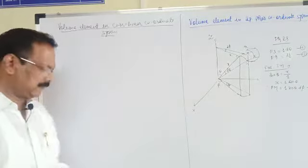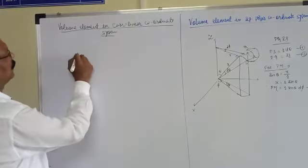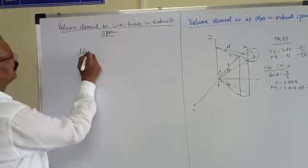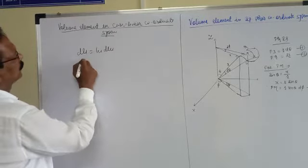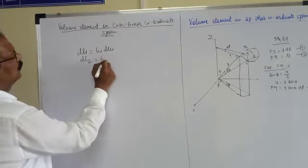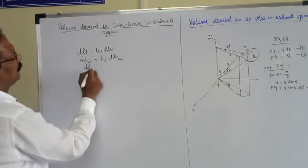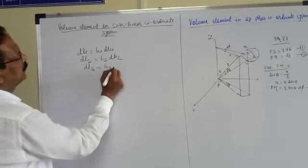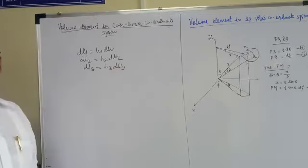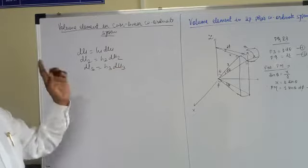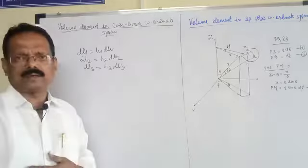Last time we saw what the length element is — we have to revise all of this. dL1 is equal to h1·du1, dL2 is equal to h2·du2, and dL3 is equal to h3·du3. So last time we saw what dL1, dL2, and dL3 are.